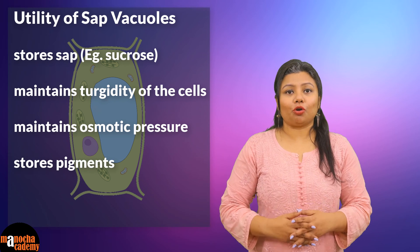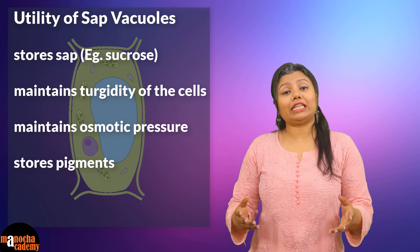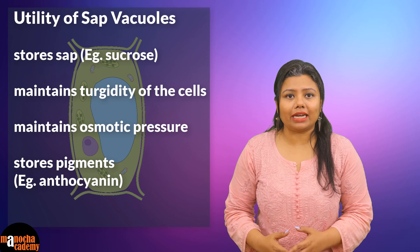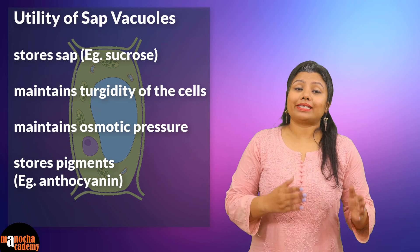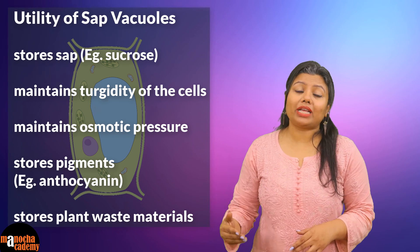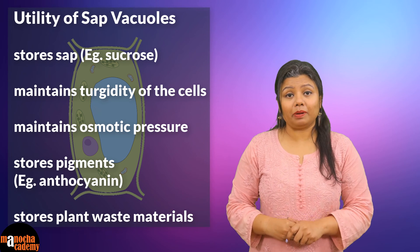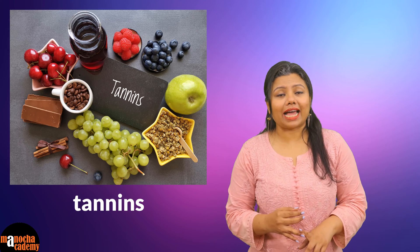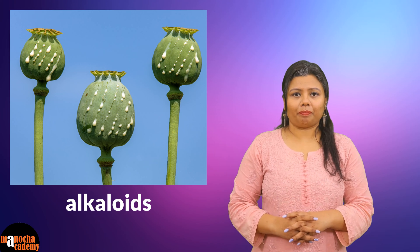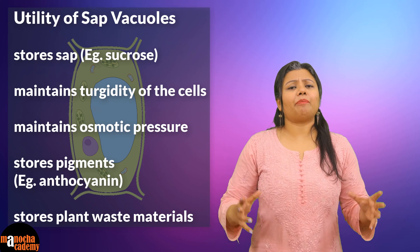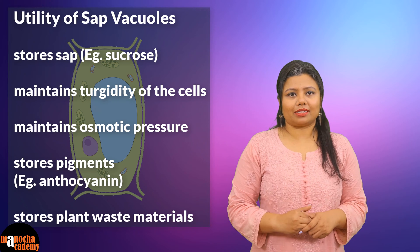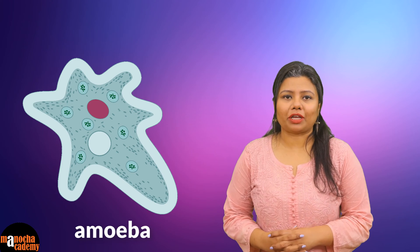Sap vacuoles have been found to store pigments, and on the basis of that, these vacuoles have different colors — for example, they store anthocyanin. Sap vacuoles are also responsible for storing different kinds of plant-based materials, for example, latex, tannins, and alkaloids. Overall, sap vacuoles are a very important storage organelle in plant cells.